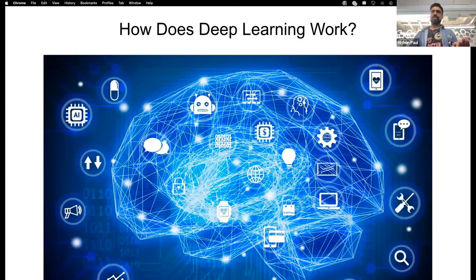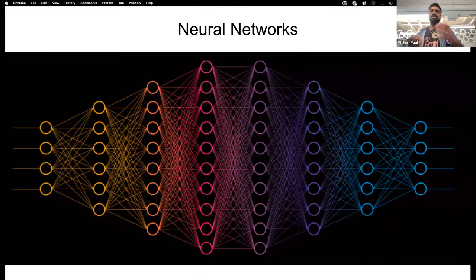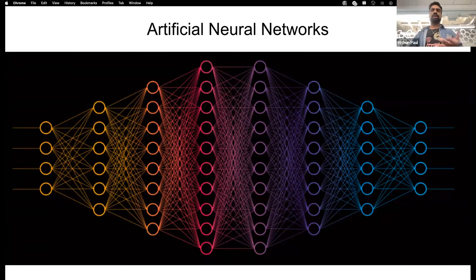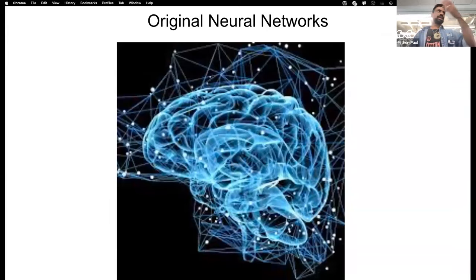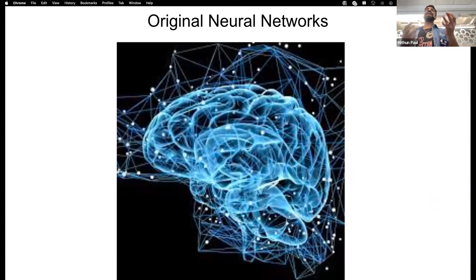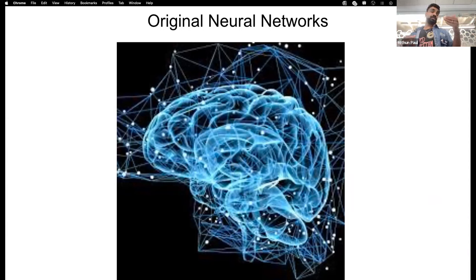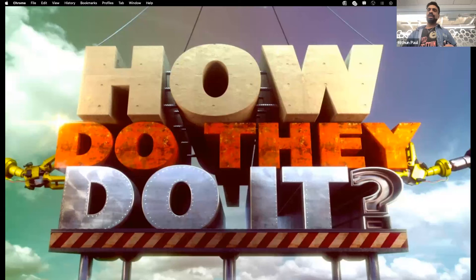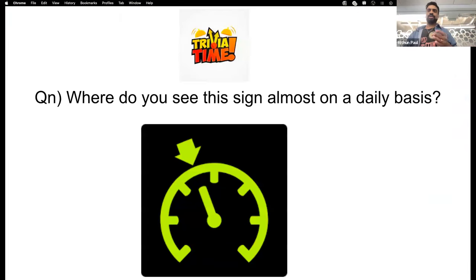To understand deep learning you need to understand neural networks. Neural networks are a connection of neurons — we call them artificial neural networks because the original neural networks are inside your head. We are trying to emulate that, albeit in a very small way. The current set of neurons in a model like GPT is only one one-hundredth of what the human brain has.